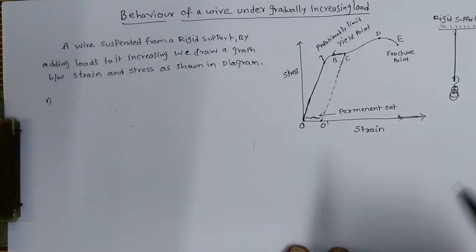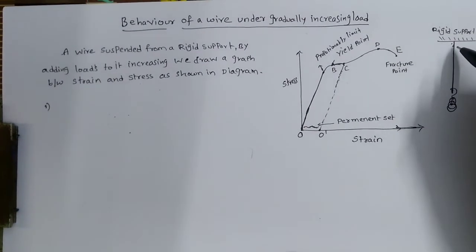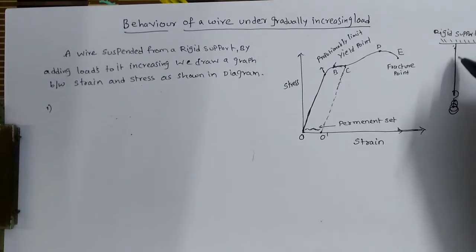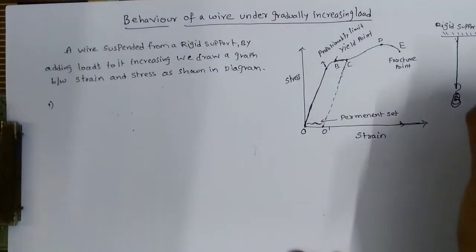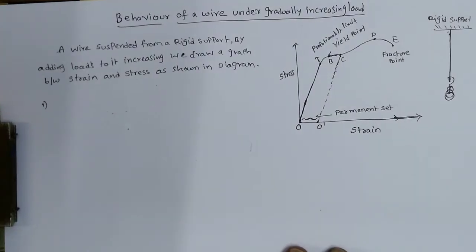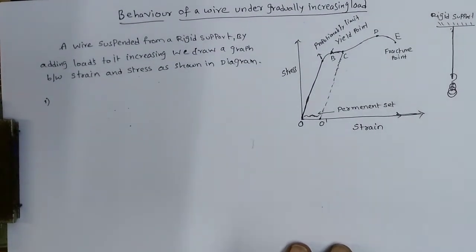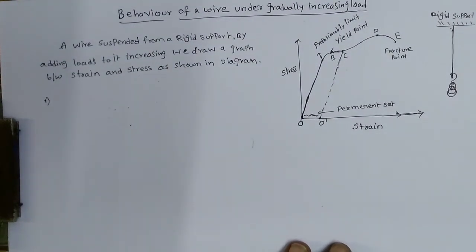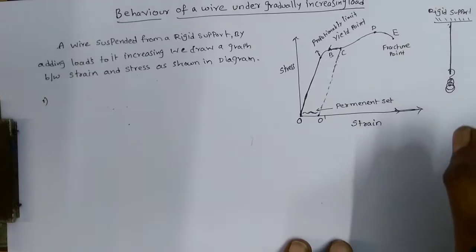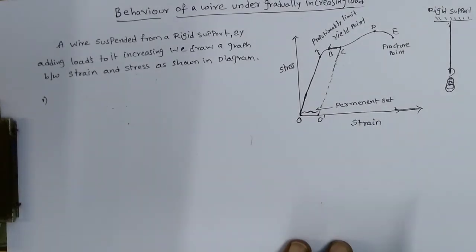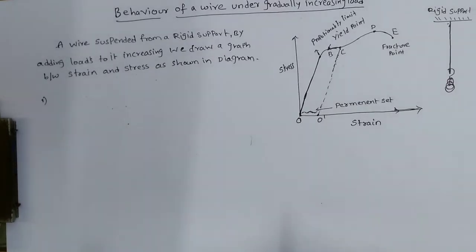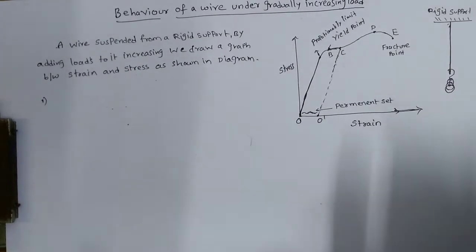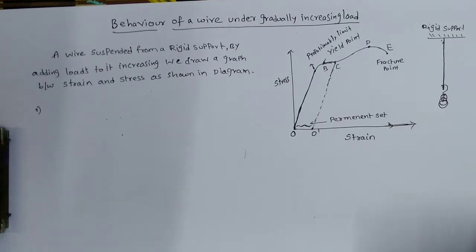The wire will later be yielding. Yielding means it becomes thinner and thinner. If you add some more weight, it goes thinner and thinner, and at a particular point it is ready to break. Once you add more weight — or even without adding weights — automatically the wire will break.